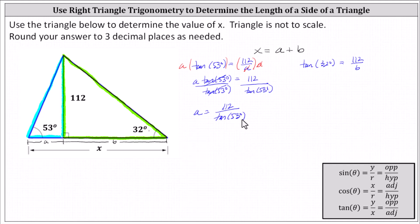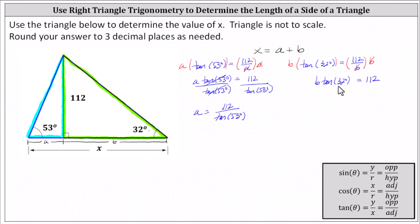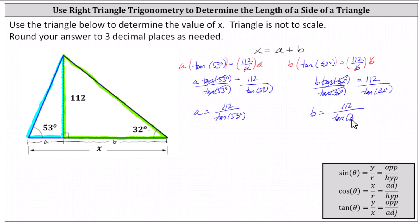For the equation on the right, we'll multiply both sides of the equation by b to clear the denominator. On the right, b divided by b simplifies to one, giving us b times tangent 32 degrees equals 112. And now we divide both sides by tangent 32 degrees, giving us b equals 112 divided by tangent 32 degrees.